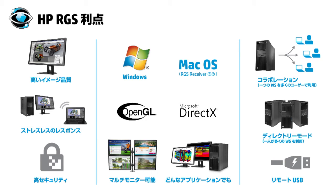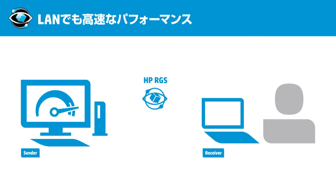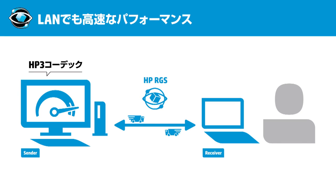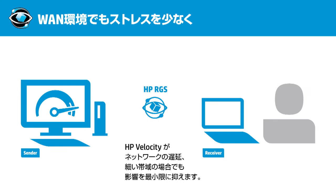次はHP RGSの特色を少し細かく見ていきましょう。HP RGSの特色の一つにそのスピードがあります。独自のHP3圧縮アルゴリズムにより、高解像度で高度なグラフィック処理が必要な3D CADやCG解析のアプリが稼働している画面もネットワーク経由でストレスなくスムースな操作が可能です。HPベロシティ機能によってバンド幅が狭いネットワーク環境でも遅延を最小限に抑え、Wi-FiやLTEを経由した無線環境でのアクセスでも高いパフォーマンスを発揮します。